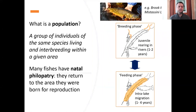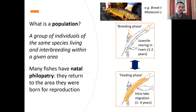Scientists like to think about fish in relation to what they're doing on the land in different areas based on what we refer to as populations. Scientists define these as groups of individuals of the same species that are living and interbreeding within a given area. One of the things that's really great about fish is that they often return to the same area that they were born when they ultimately mature as adults and reproduce themselves. We call this in scientific terms natal philopatry.